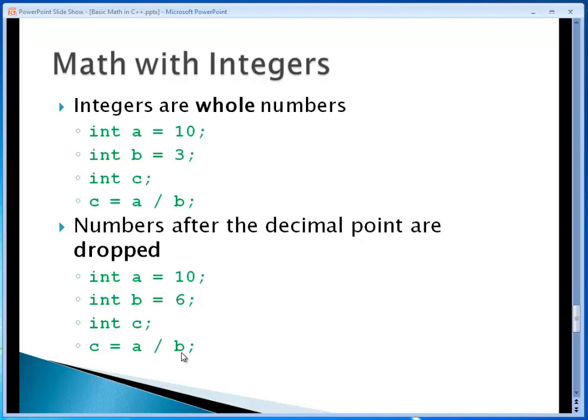So if we were thinking, now what do I do with the value c if it's 1.667 but it's an integer and can't hold a decimal value, do I round up to 2 or do I keep it at 1? In this case, we know now that numbers after the decimal point are dropped when we do integer math. So the value of c in this case would be 1.